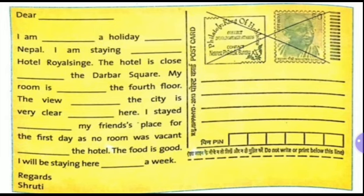Now again, at first place: mummy and papa. Then 'on' to Nepal — instead of 'to', 'in' can also be used here: I am on a holiday in Nepal. I am staying at Hotel Royal Shinge. The hotel is close to the Darbar Square. My room is on the fourth floor. The view of the city is very clear from here. I stayed at my friend's place for the first day as no room was vacant in the hotel. The food is good. I will be staying here for a week. This is how you have to fill up the blanks.